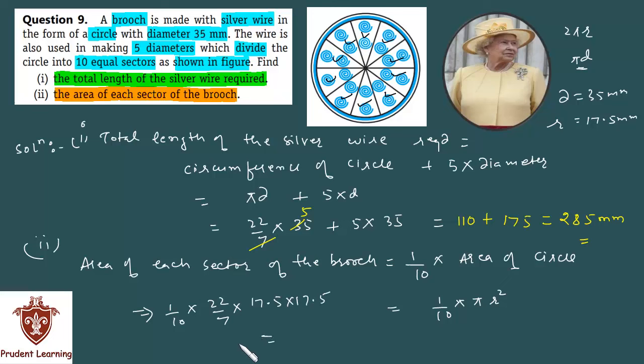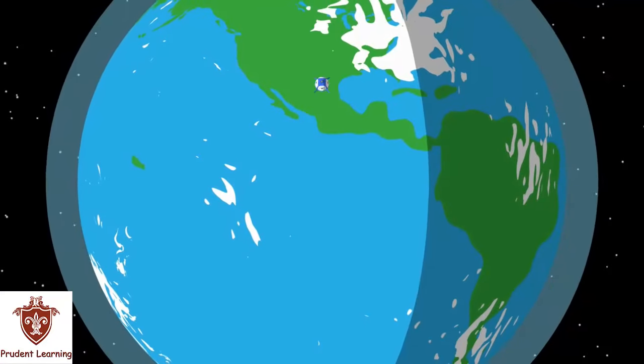When you further simplify, I'm leaving the calculation part for you, you get 96.25 and the unit is millimeter square because you found the area. So finally you can write 96.25 millimeter square. This completes our solution.